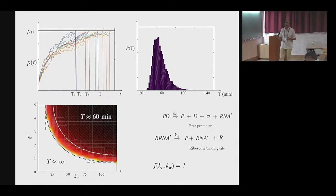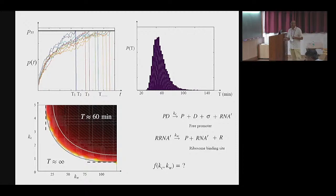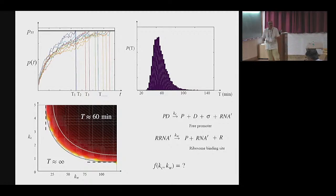In the Kc-Kw parameter plane (where Kc is roughly a transcription rate and Kw a translation rate), there is a nice phase separation: when Kc or Kw is very small, there is hardly any transcript or protein, so the first passage time will be almost infinite. For reasonable values taken from literature, first passage times are on the order of minutes. There is an interesting crossover regime where Kc and Kw can be tuned to obtain a fast first passage time with the desired accuracy.